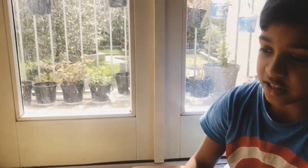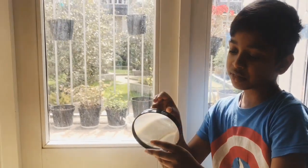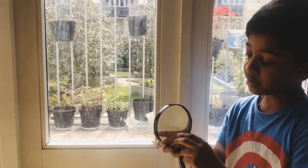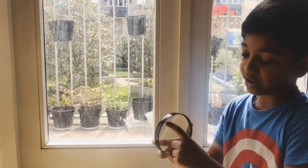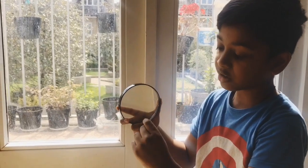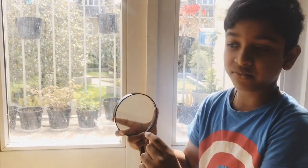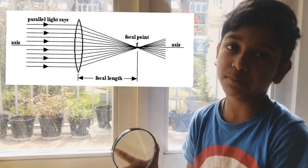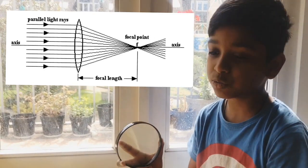So our question is how did the paper get on fire. So I'm going to tell the answer. The sun has light, so the light goes into the magnifying glass in particles or waves. Then the magnifying glass refracts the light and then converges it to a point. That point is called the focal point.